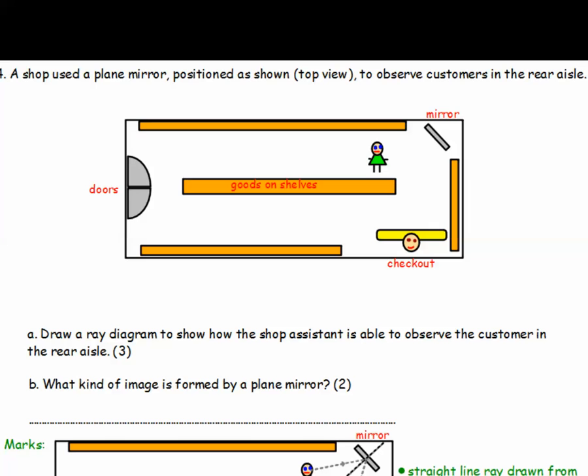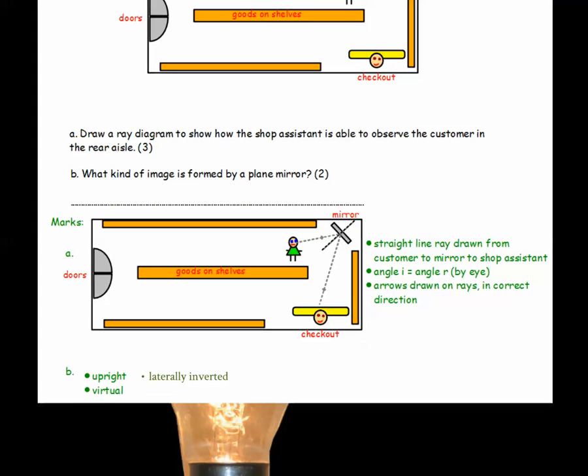A shop used a plain mirror, positioned as shown from the top view, to observe customers in the rear aisle. Part A, draw a ray diagram to show how the shop assistant is able to observe the customer in the rear aisle. And B, what kind of image is formed by a plain mirror. So, for three marks, there should be a straight line ray drawn from the customer to the mirror to the shop assistant. Draw the normal on there to help you. Angle I is equal to angle R. Angle of incidence equals angle of reflection. And there should be arrows drawn on the rays going in the correct direction. The kind of image formed by a plain mirror is an upright, virtual, you could also have laterally inverted image.